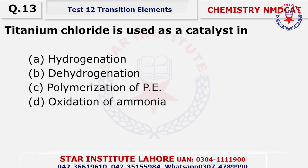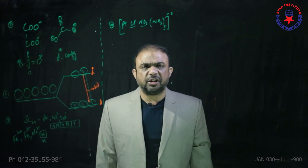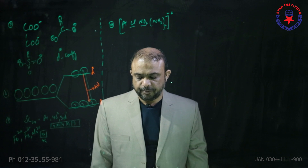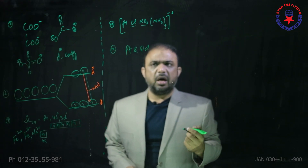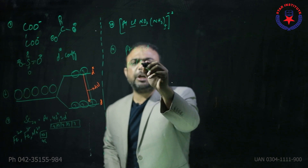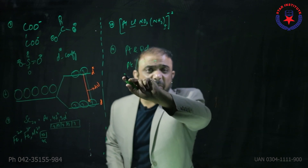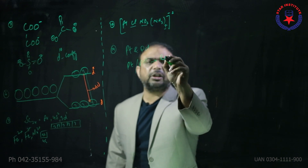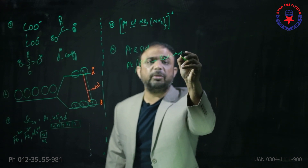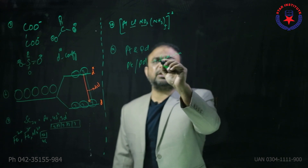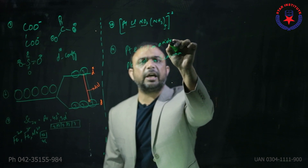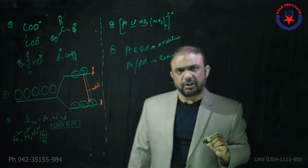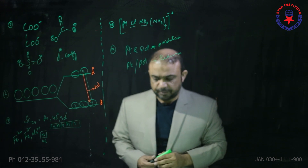Question thirteen: titanium chloride is used as a catalyst for the polymerization of polyethylene — this is a retention question, you have read it in organic chemistry. Question fourteen: Pt and Pd — if the paper writes Pt slash Pd, then either platinum or palladium is used; platinum is used as a reduction catalyst. But if both are used together, they are called coupling catalysts. When used together they are oxidation catalysts, used in the oxidation of ammonia in Ostwald's process.